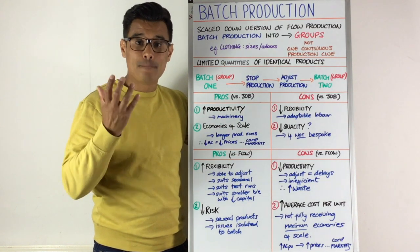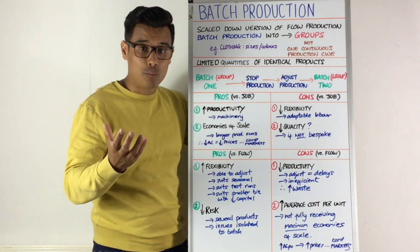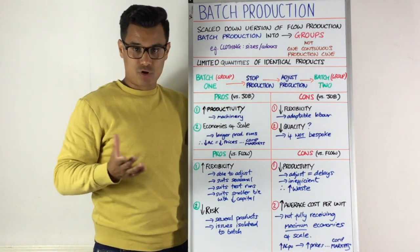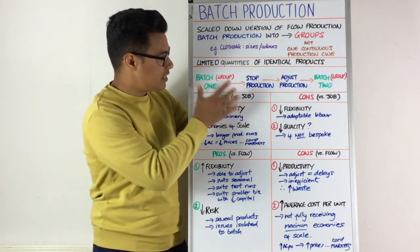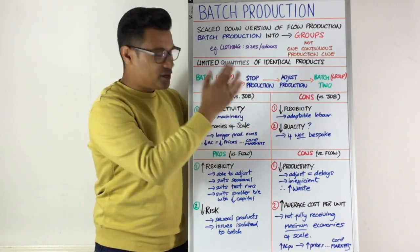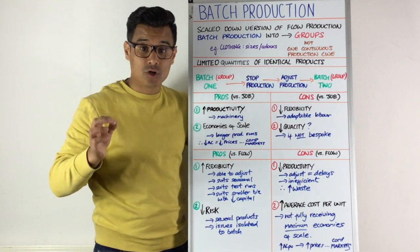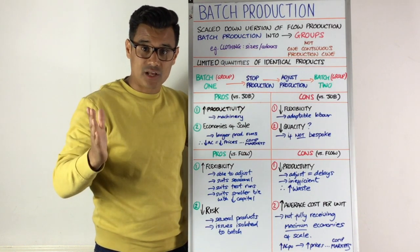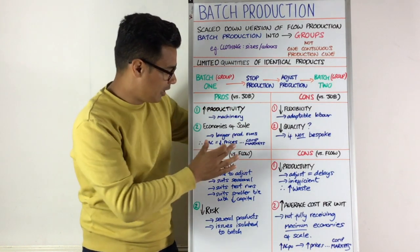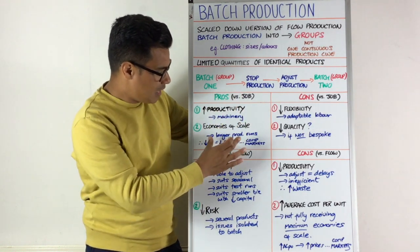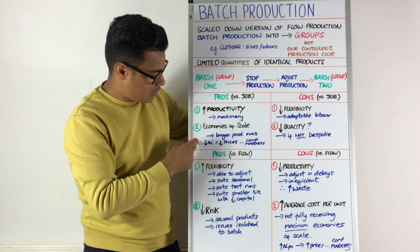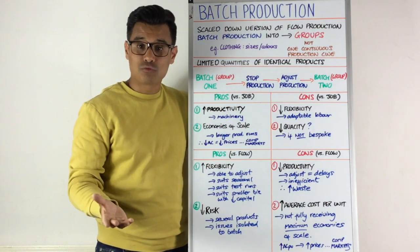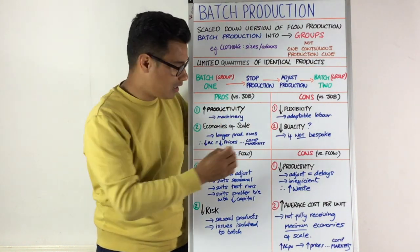Let's start with the pros and cons of batch production compared to job production. The pros are that it's going to have higher productivity because you've introduced machinery, and because of that machinery you'll likely get technical economies of scale, and probably also purchasing economies of scale through bulk buying from suppliers. With these economies of scale it's likely you'll reduce your average cost per unit, and if you do that you should be able to reduce your prices — which in a competitive market is fantastic.